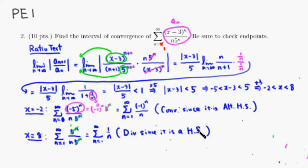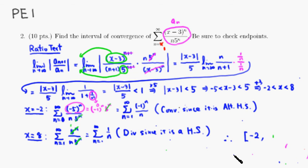So therefore, we do not want to include 8, but we do include negative 2. The interval of convergence is [-2, 8) — a square bracket at negative 2 indicating we include it, and a parenthesis at 8 indicating we exclude it. That's it. I hope this was clear.